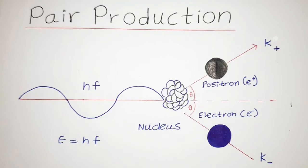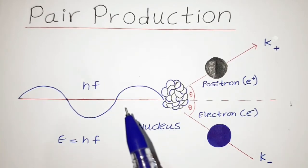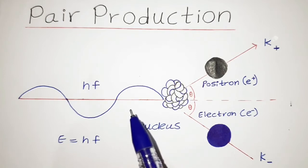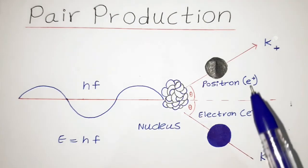Internal pair production is also termed as internal pair creation. Let us now discuss about internal pair creation. Internal pair production or pair creation happens whenever the excess amount of energy in the nuclear energy level transition is so high that it would lead to the creation of a pair of an electron and a positron.